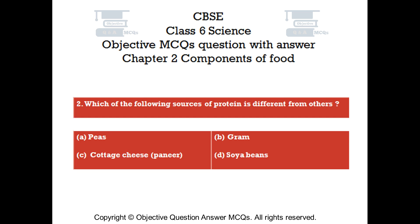Question number 2. Which of the following sources of protein is different from others? Option A: Peas. Option B: Gram. Option C: Cottage cheese (Paneer). Option D: Soya beans.